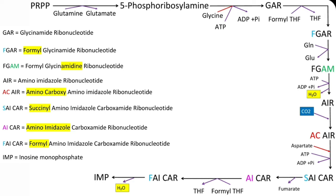In the next reaction, SAICAR is converted to AICAR. During this reaction, S from SAICAR is removed as fumarate. To remember this: in the TCA cycle, succinate is converted to fumarate. Similarly, after removal of succinate in the form of fumarate from SAICAR, we get AICAR.